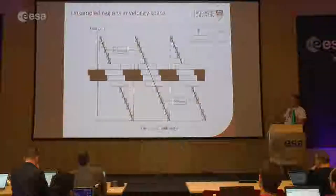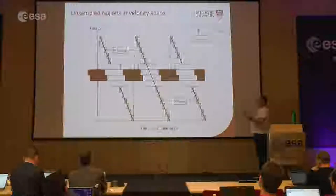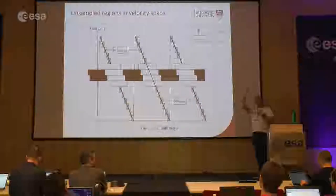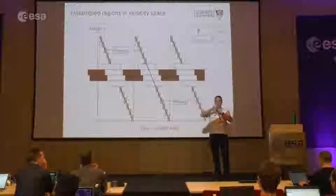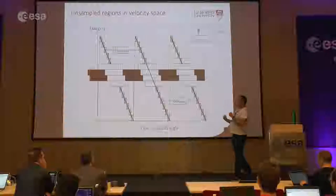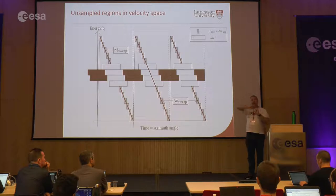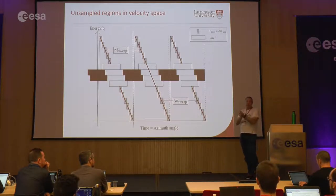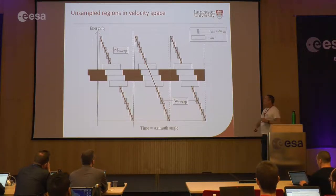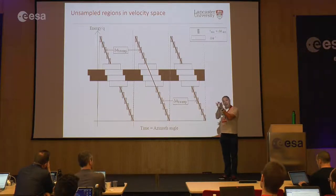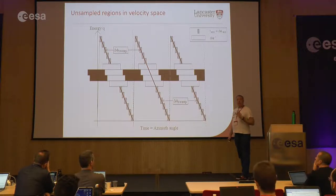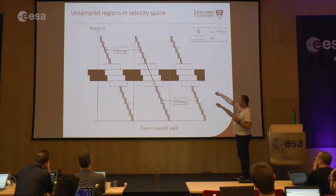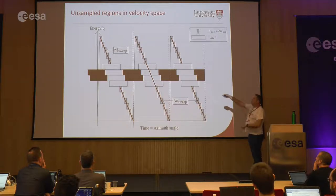Because you're sampling in time and in azimuth simultaneously, as the instrument samples in azimuth it's also sampling in energy. You'd hope that the energy sampling time versus the azimuth sampling time is appropriate for the physical phenomenon you're studying. But because of the finite angular resolution of the sensor — the entrance aperture I showed earlier — there are some parts of space that are not measured at all.